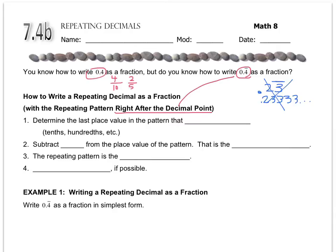So the first thing that you want to do is you want to determine the last place value in the pattern that repeats. For example, this would be repeating in the tenths place. But you could also have something repeating in the hundredths place, the thousandths place, etc. Then what you want to do is subtract 1 from the place value of the pattern because it's very close, but it's not quite exactly that position because it repeats.